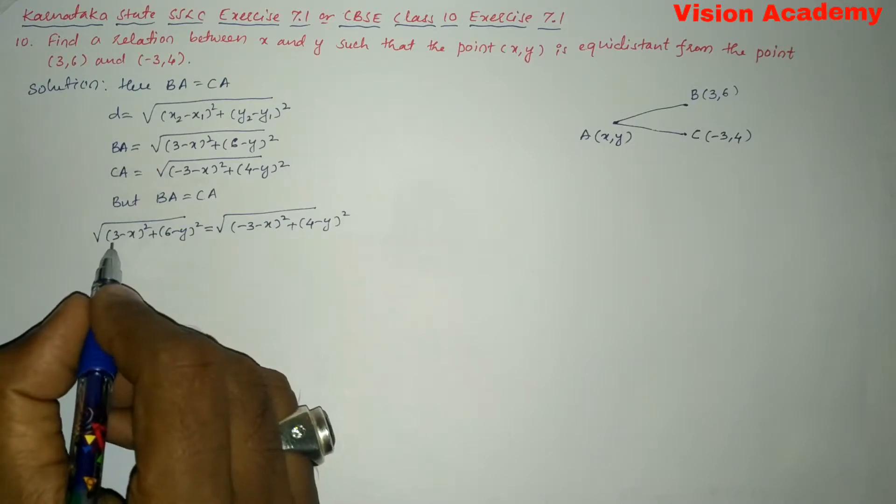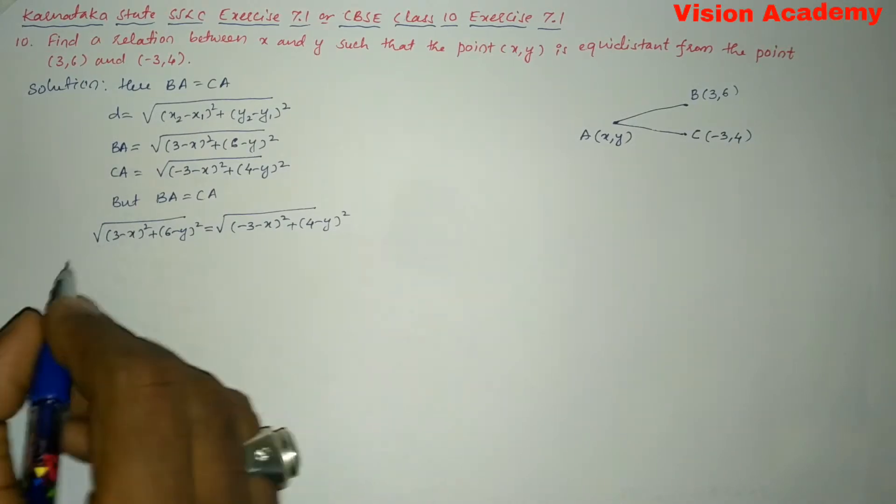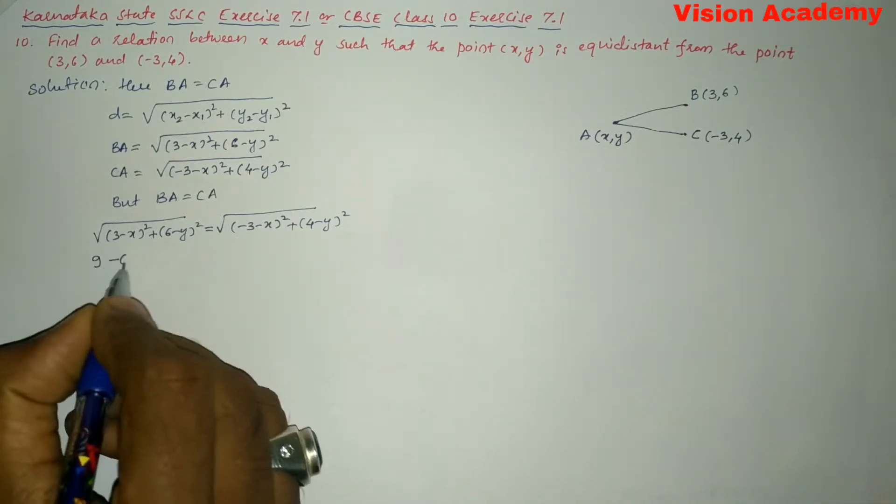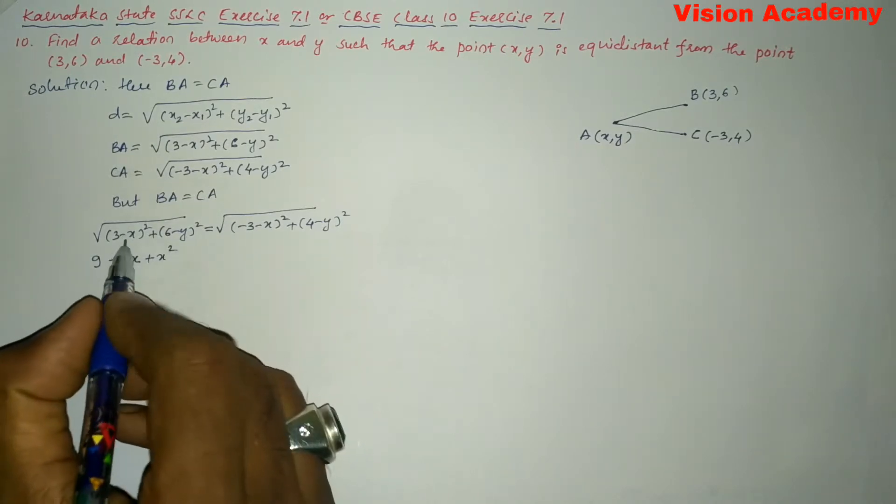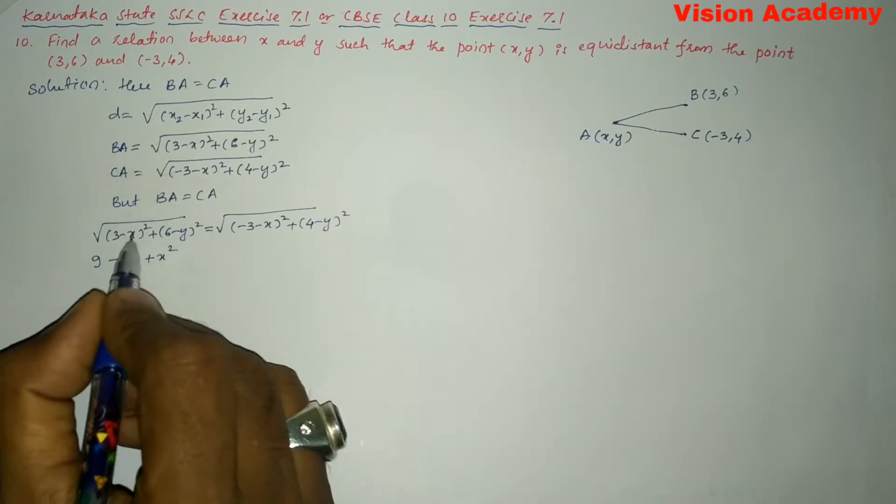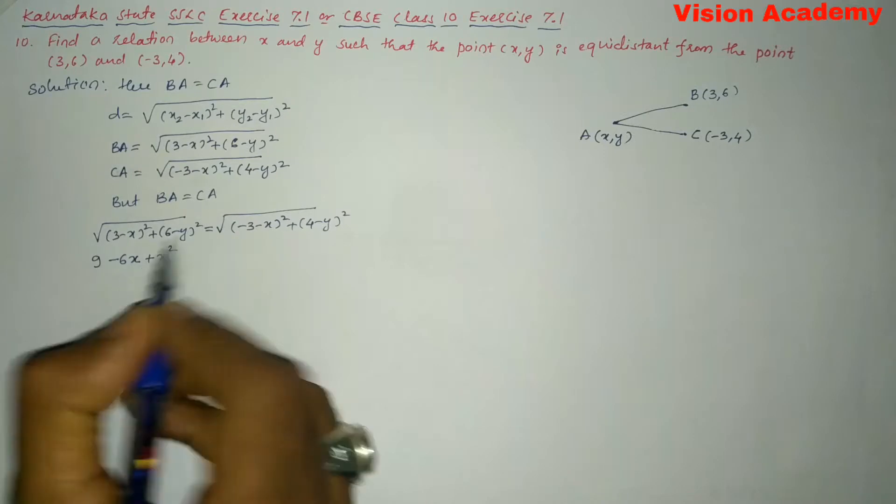So, here it is in the form of (A - B)². Let us expand this as 9 - 6X + X². It is because of A² + B² - 2AB, that is 2 times 3 is 6 and X.